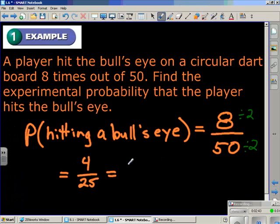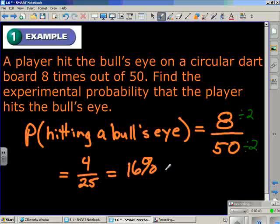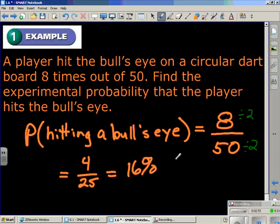When the denominator is 25, to figure out the percent, you just multiply the numerator by four. So it has a 16% chance of hitting a bullseye based on this experimental probability.